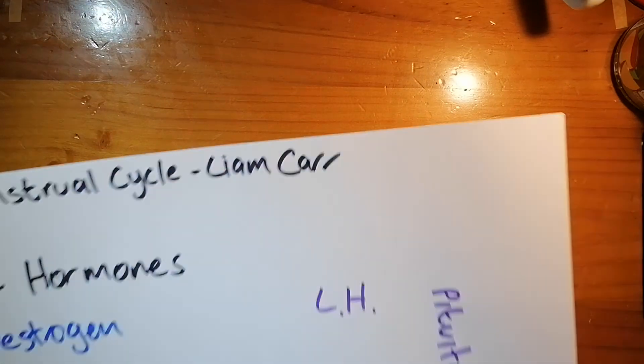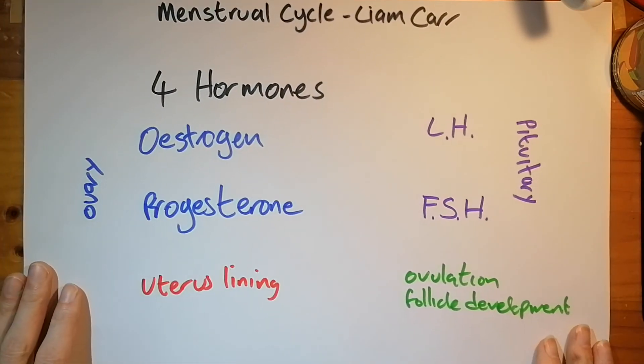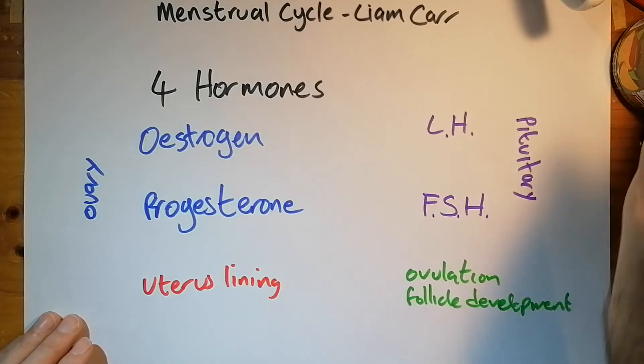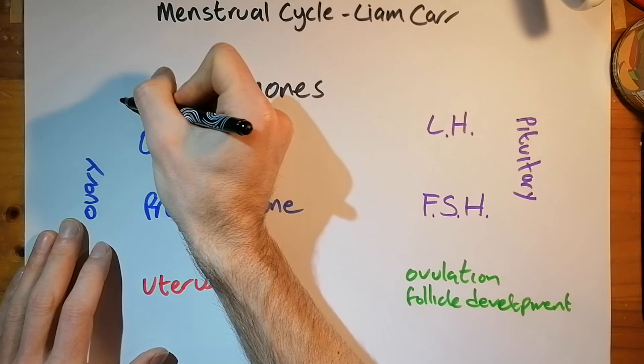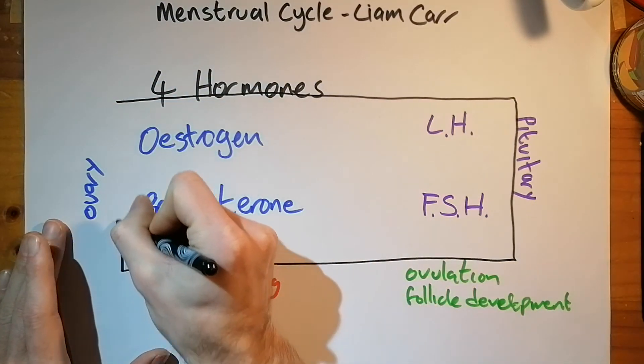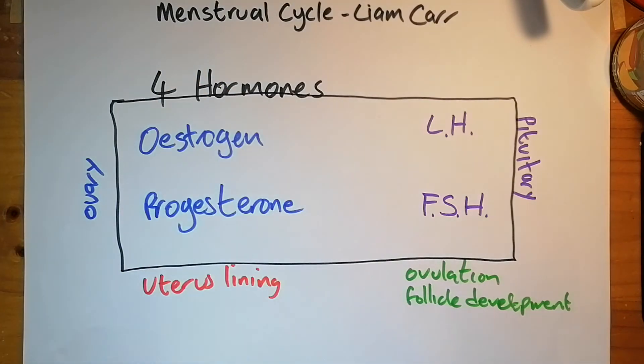So the next thing that we need to have a look at is how those hormones interact with each other. This is quite an important example of negative feedback. And we'll use this again. So here we have our four hormones back. And we're interested in how they interact with each other.